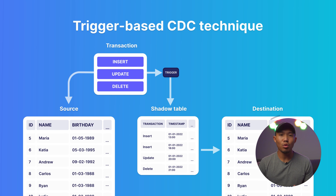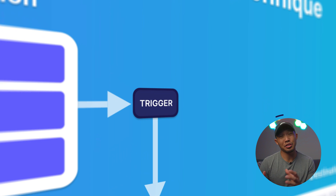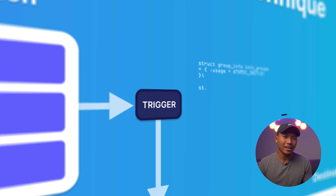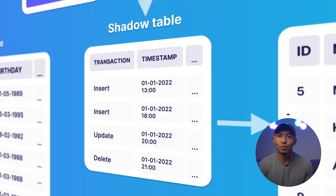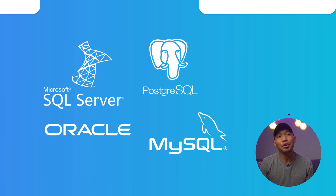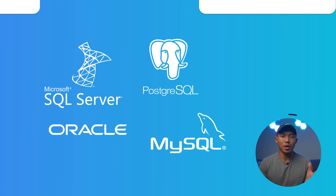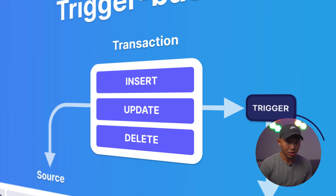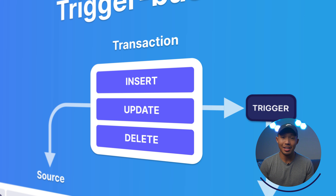The next two methods are fairly similar. The third method is called database triggers, or trigger-based CDC. This method requires the creation of a database trigger, which contains logic to manage metadata within the same table or in a separate bookkeeping table — otherwise called a shadow table. Many databases such as Postgres allow you to create these triggers. These triggers will occur when there are transactions made in the source database, and the logic captures those changes and puts them in the bookkeeping table.